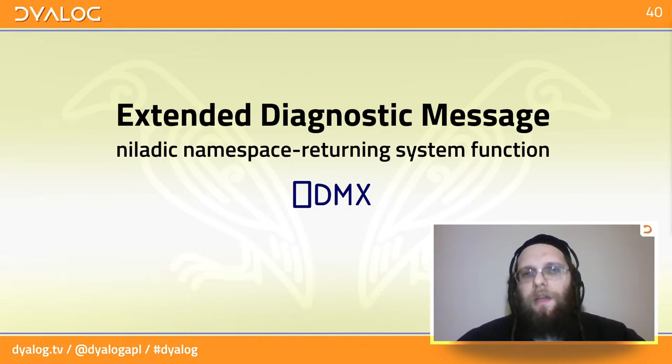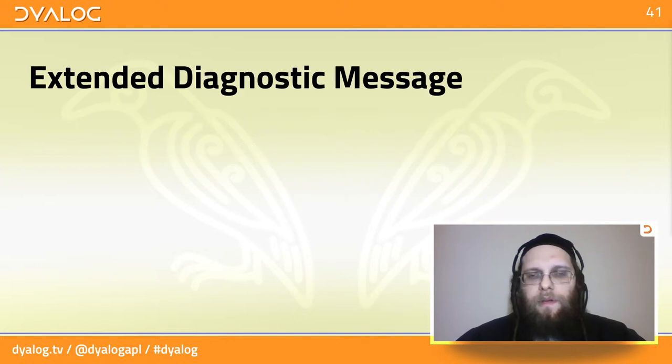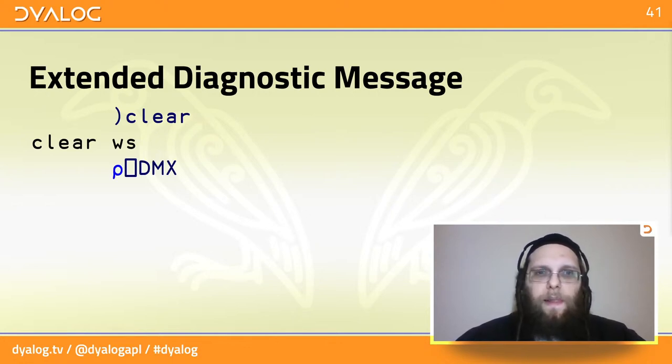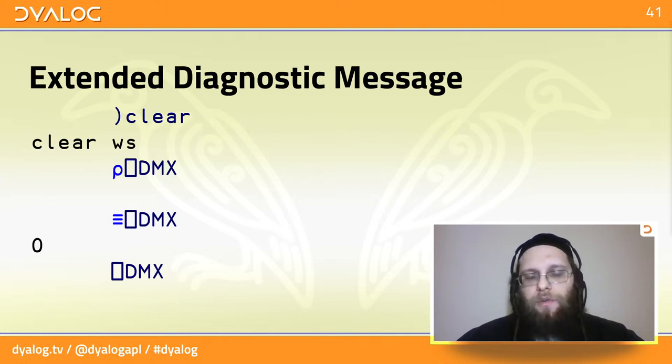So this is the extended diagnostic message. It contains a lot of information about the last error that happened, not just its type. Let's start off with a clear workspace. If you want to look at what QuadDMX is, you'll find it's a bit special. The shape is empty, so that's a scalar. And the depth is zero, so it's a simple scalar. But if you try to just do QuadDMX, nothing at all prints, not even an empty line. By jumping through a little bit of a hoop, we can find out that QuadDMX returns a namespace.